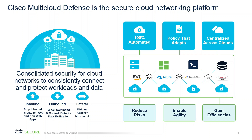We want to make sure we're stopping inbound threats from web or non-web applications. On the outbound side, we want to block command and control, botnets, and data exfiltration. For lateral movement, we want to mitigate the attacker's ability to navigate within the environment. The goal here is to reduce risk, enable agility, and gain efficiencies.